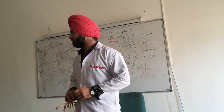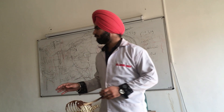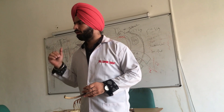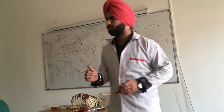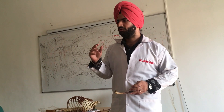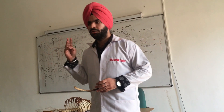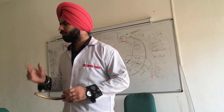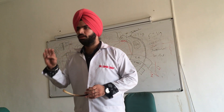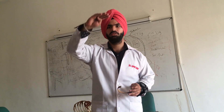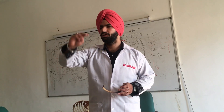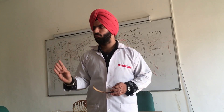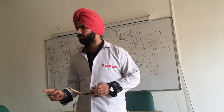The topic for today is ribs. We have to differentiate between, first of all, classification. There are three classifications: typical ribs and atypical ribs — first classification. Typical ribs are from 3 to 9, and atypical ribs are the 1st, 2nd, 10th, 11th, and 12th.